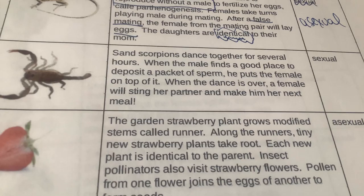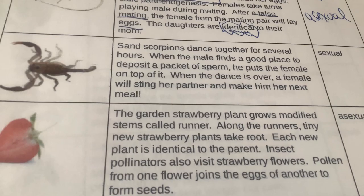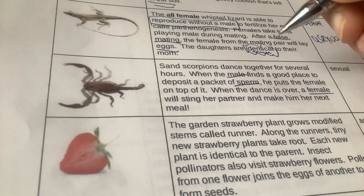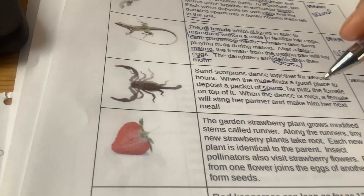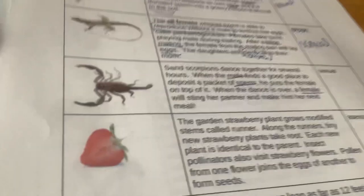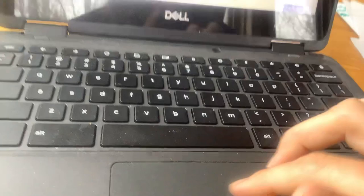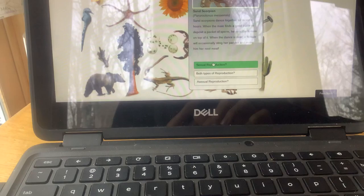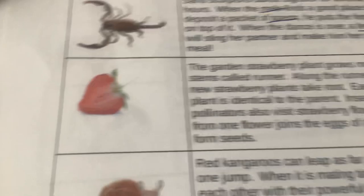Next is our sand scorpion — I've never seen one of those, they look a little scary. They dance together for several hours. When the male finds a good place to deposit a packet of sperm, he puts the female on top of it. When the dance is over, the female will sting her partner and make him her next meal. So there is a male, there is sperm, there is a female — if there's male and female, it is sexual. Let's take a look at our scorpions — it sounds to me like sexual, and yes, it is.